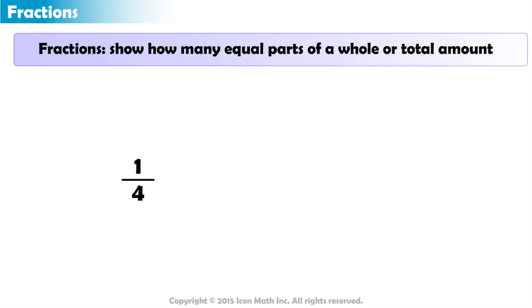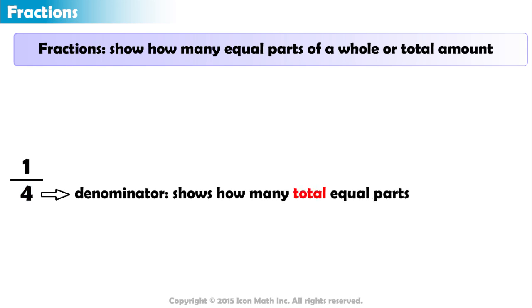In a fraction, the number below the fraction bar is called the denominator and shows how many total equal parts are in the whole. The four in the fraction one-fourth shows that the whole has a total of four equal parts.